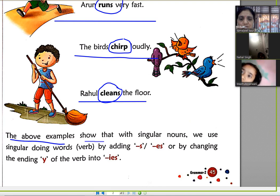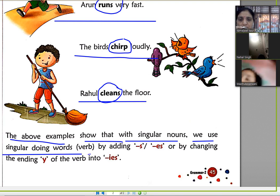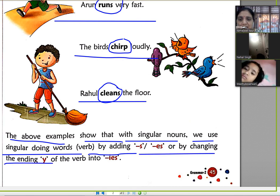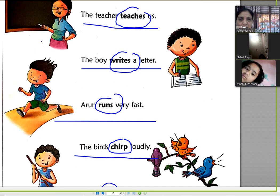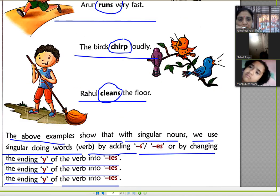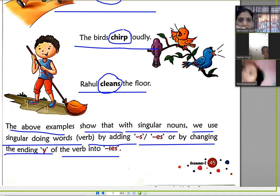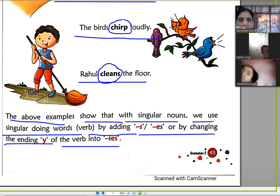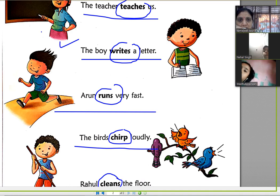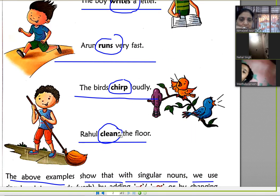The above examples show that with a singular noun, we use singular doing words — verbs — by adding s or es, or by changing the ending y of the verb to ies. For example, 'teach' becomes 'teaches' because if the person is singular, we use singular doing words — we add s or es to the verb.